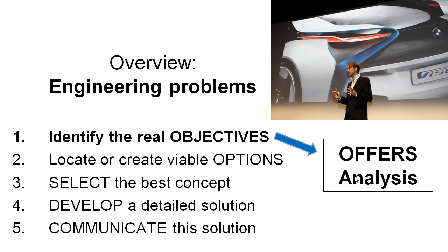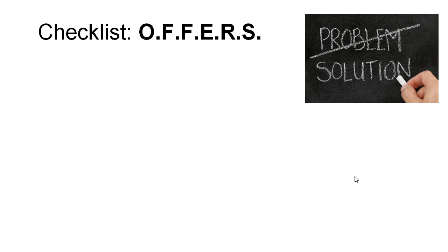In today's video we're going to look at the first step in this process — identifying those real objectives — and the tool we're going to use for that is called an OFFERS Analysis. So what is OFFERS? Basically it's a checklist. OFFERS is an acronym where each letter stands for something and serves to remind you about the different things you need to think about when defining your problem.